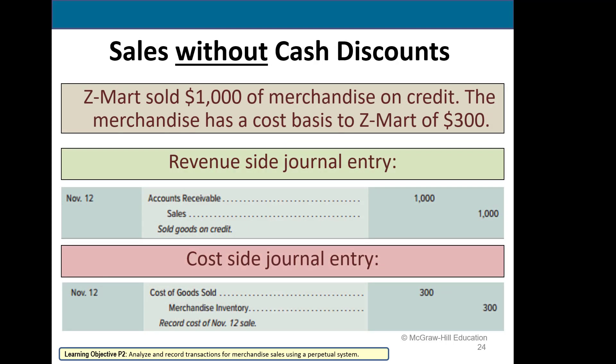On the revenue side: debit cash or accounts receivable, credit our revenue account called Sales. On the cost side, if the merchandise has a cost of $300, we debit the expense Cost of Goods Sold and credit merchandise inventory, because we are reducing merchandise inventory since we no longer have that inventory in our account.